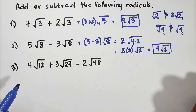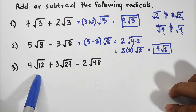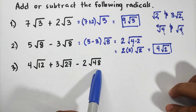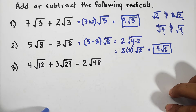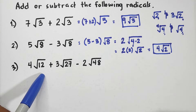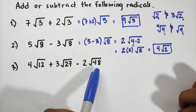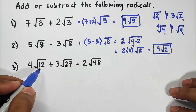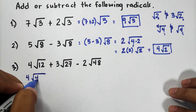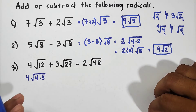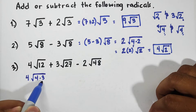Always check if you can still simplify after combining similar radicals. For number 3, we have 4√12 + 3√27 − 2√48. These don't look similar yet, but each can be extracted. The factors of 12 are 4 × 3, where 4 is a perfect square. So we have 4 × √(4×3).